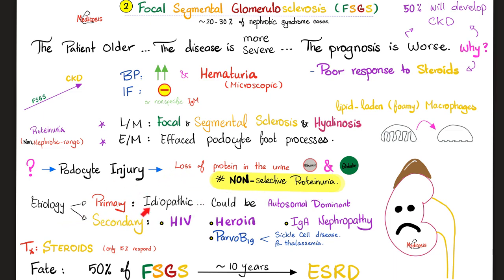Causes include: primary idiopathic (pathology unknown), autosomal dominant if inherited, or secondary to another disease such as HIV, heroin abuse, IgA nephropathy — so you can have both nephritic and nephrotic features in the same patient — and parvovirus B19, which causes pure red cell aplasia if the patient has a hemolytic anemia such as sickle cell disease or beta-thalassemia.